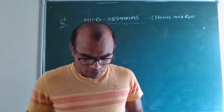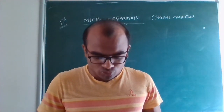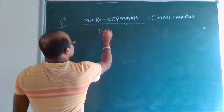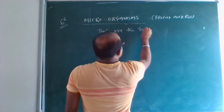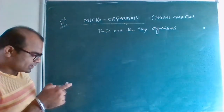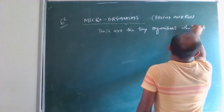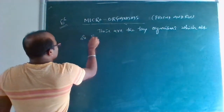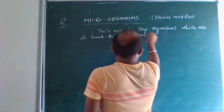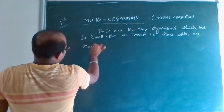Quick revision: What are microbes? Microorganisms are tiny organisms which are so small that we cannot see them with an unaided eye, or naked eye.